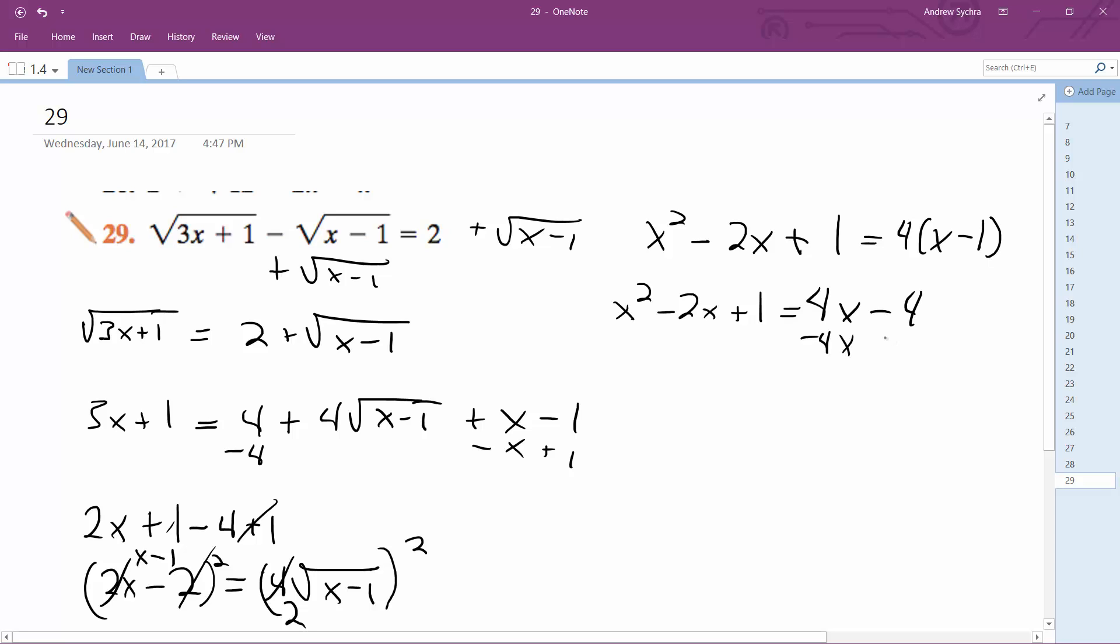Minus 4x plus 4, so minus 4x plus 4. So I get x squared minus 6x plus 5 equals 0.